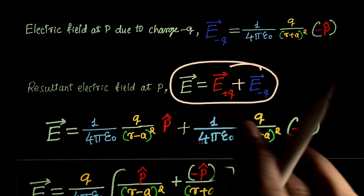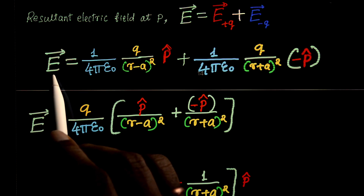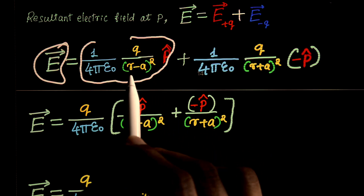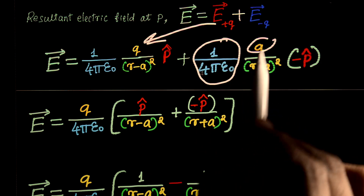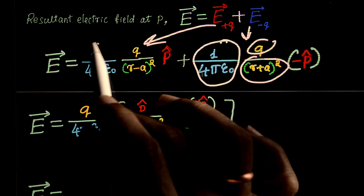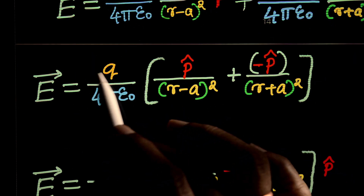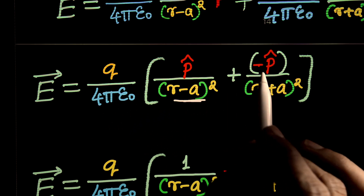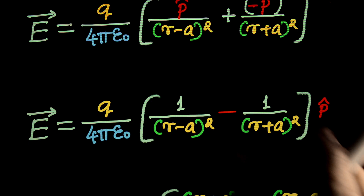The resultant electric field at point P is the vector sum of electric fields due to both charges. So E = (1/4πε₀) × q/(r − a)² × p̂ + (1/4πε₀) × q/(r + a)² × (−p̂). This can be written as E = q/(4πε₀) × [p̂/(r − a)² − p̂/(r + a)²].